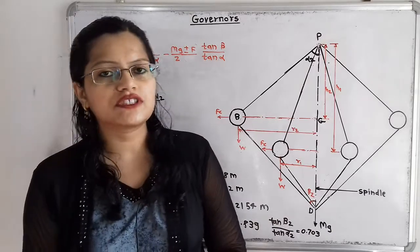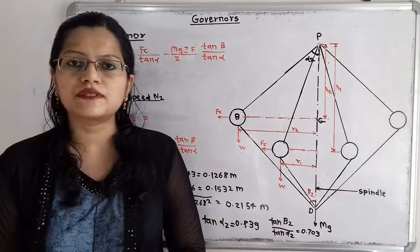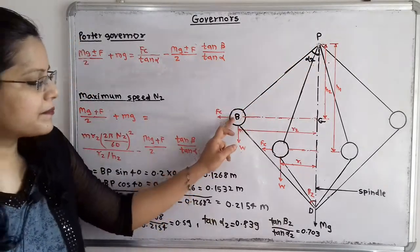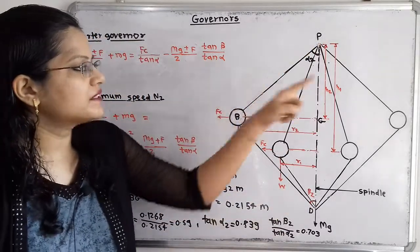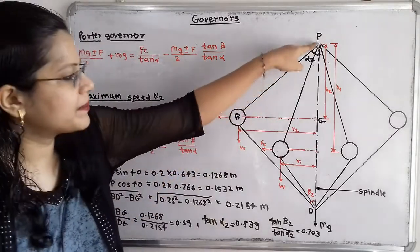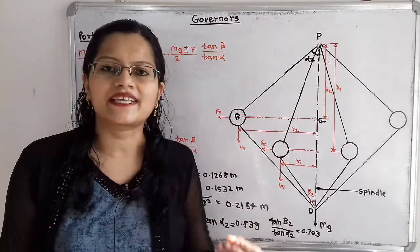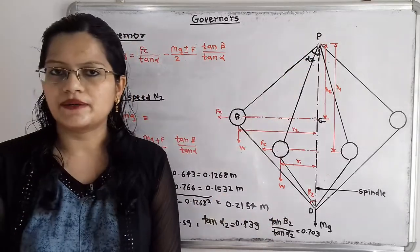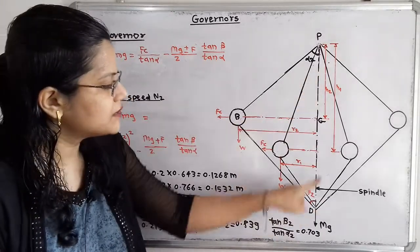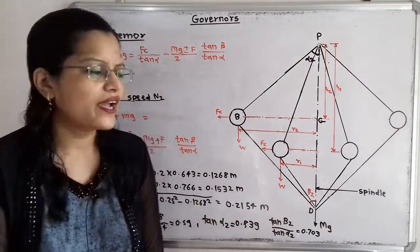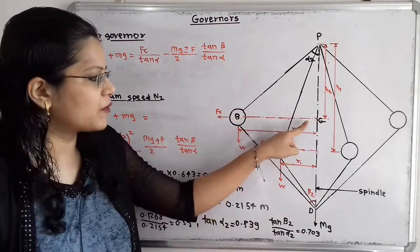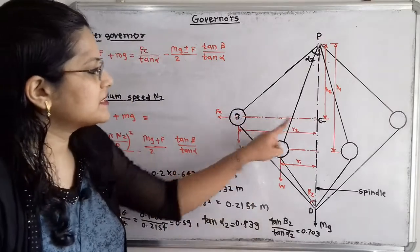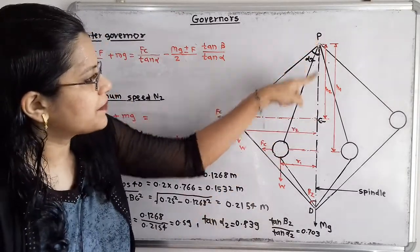Now let us understand the position of the fly balls when the governor is rotating with maximum speed N2. Here B is the centre of the fly ball, PB is the arm and BD is the link. The angle made by arm PB with the vertical spindle axis is angle alpha 2. For maximum speed we select the larger angle, so alpha 2 is equal to 40 degrees. The angle made by link BD with the vertical spindle axis is angle beta 2. The horizontal distance BG is R2 and the vertical distance PG is H2.